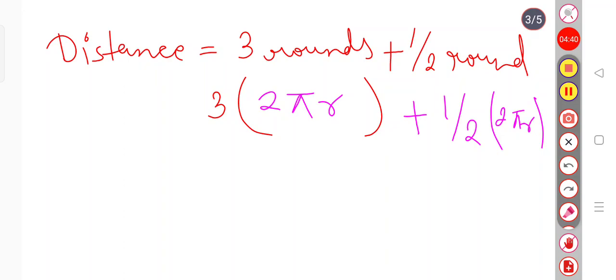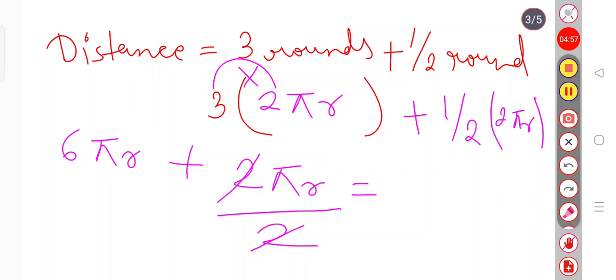So this will be 6πr because we have multiplied 3 times 2πr. Plus this will be 2πr divided by 2. So 2 and 2 cancel, so it will be πr. We can add them, so 6πr plus πr equals 7πr.